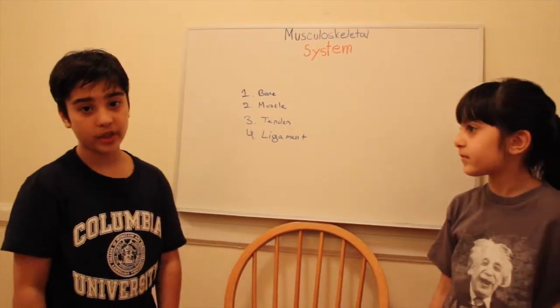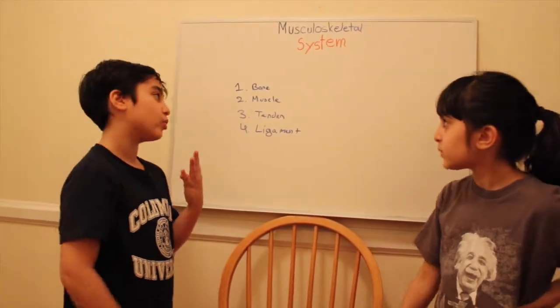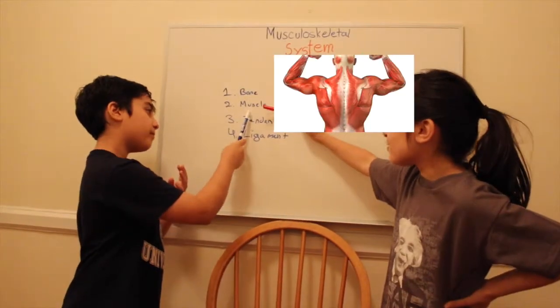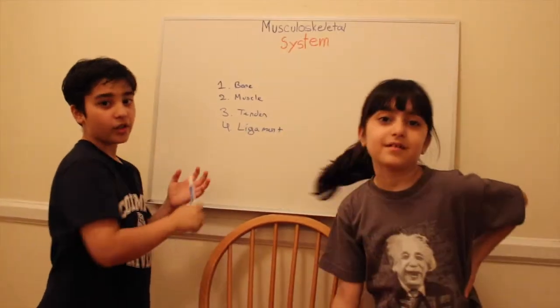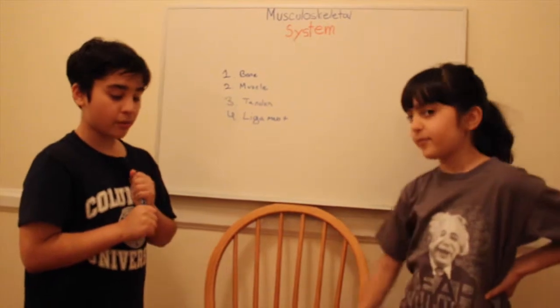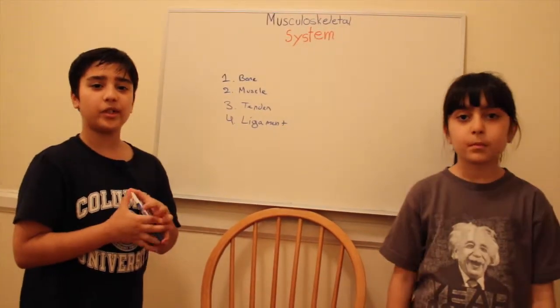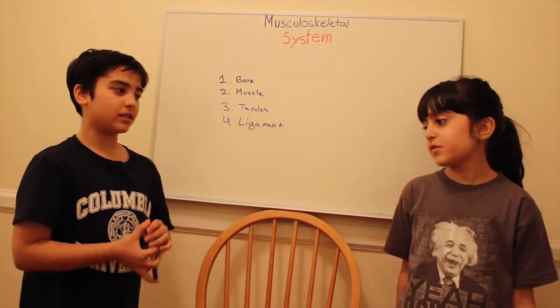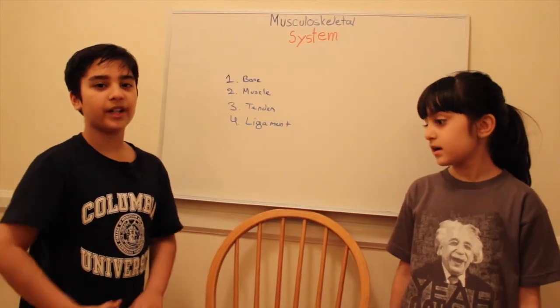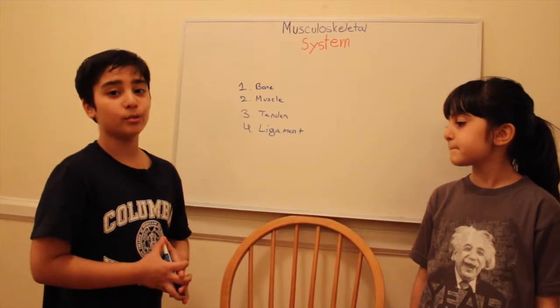The musculoskeletal system is really important and it's composed of four major organs: the bone, the muscle, the tendon, and the ligament. These four organs are so important that if we didn't have it we'd just be blobs because the bone helps you stand upright and the muscles allow you to move.